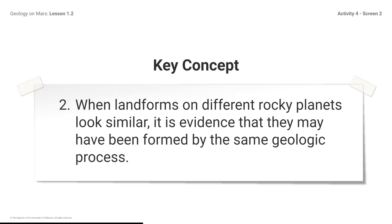Key Concept 2: When landforms on different rocky planets look similar, it is evidence that they may have been formed by the same geologic process. Remember, because the systems on the rocky planets are similar, we can investigate processes on Earth to understand processes on other rocky planets.